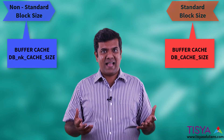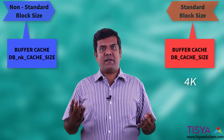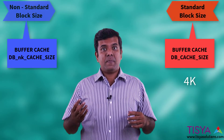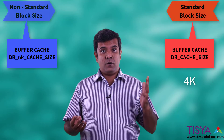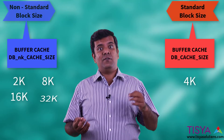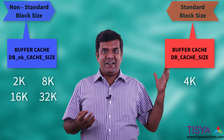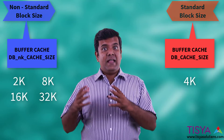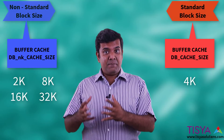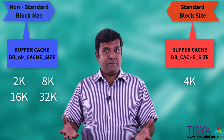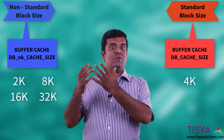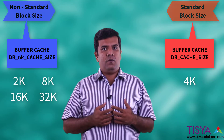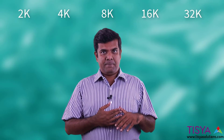So let's say your database has a default block size of 4k. Then you have a choice of setting 2k, 8k, 16k, or 32k as non-default cache sizes. Any data kept in a tablespace with a non-default block size will be read into that corresponding cache only. The database block size can be 2k, 4k, 8k, 16k, or 32k.